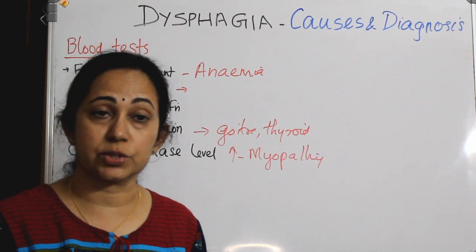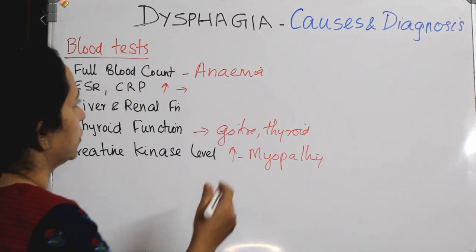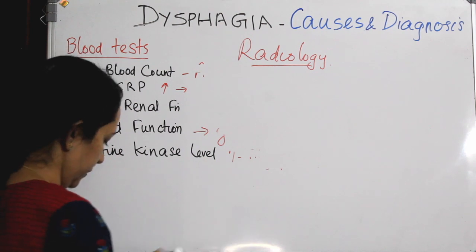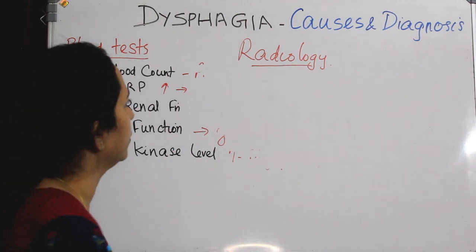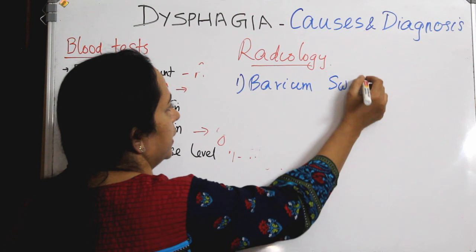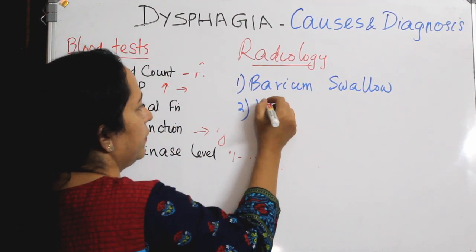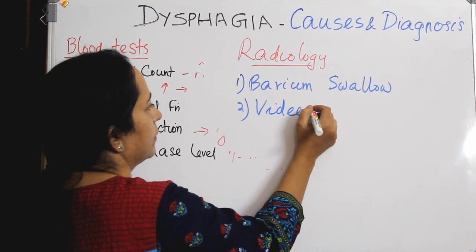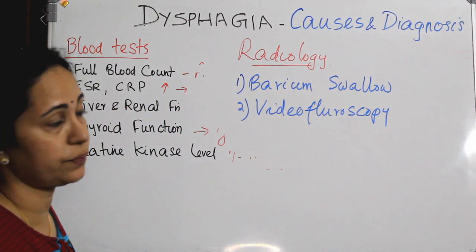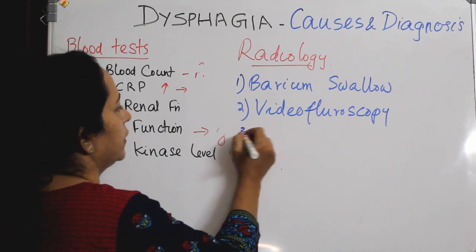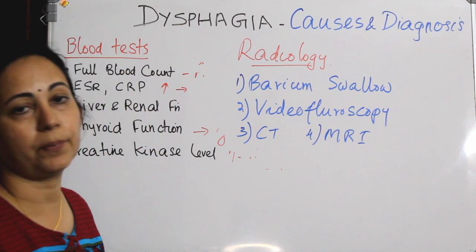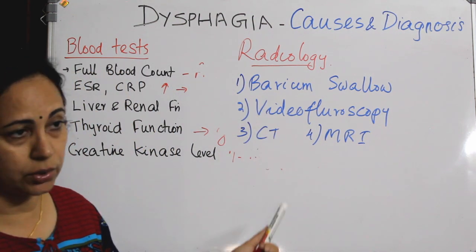We can divide the special investigations into radiological investigations and others. Radiological investigations include barium swallow — either conventional barium swallow or videofluoroscopy of the different phases of swallowing, which is a very important investigation — or CT or MRI, depending upon your clinical suspicion.